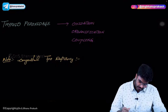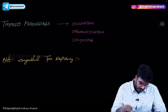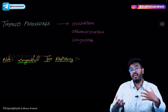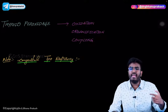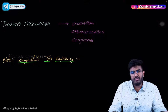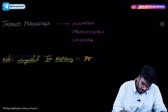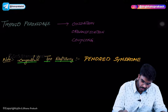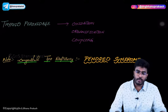Congenital TPO deficiency: whenever a patient has congenital thyroid peroxidase deficiency — meaning by birth this person has deficiency of TPO — can he have thyroid hormone production? Definitely not. The name of this syndrome is called Pendred syndrome. In Pendred syndrome, there is congenital absence or deficiency of thyroid peroxidase.